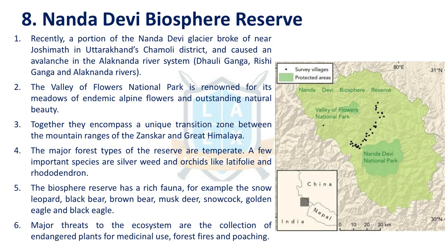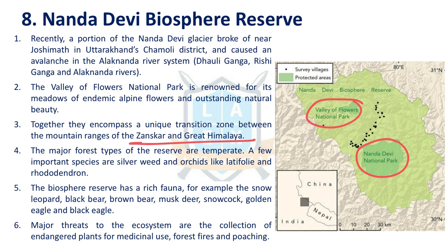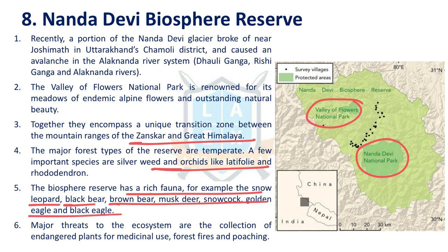The next issue is Nanda Devi Biosphere Reserve. A portion of the Nanda Devi Glacier broke off near Joshimath, Chamoli district, Uttarakhand, leading to avalanches in the Alaknanda river system. The Nanda Devi Biosphere Reserve consists of Nanda Devi National Park and Valley of Flowers National Park. The Valley of Flowers forms a transition zone between the Zanskar Mountains and the Great Himalayas. This biosphere region has alpine forests and orchards; its rich fauna includes snow leopard, black bear, and brown bear. Major threats include collection of endangered plants for medicinal use, forest fires, and poaching.